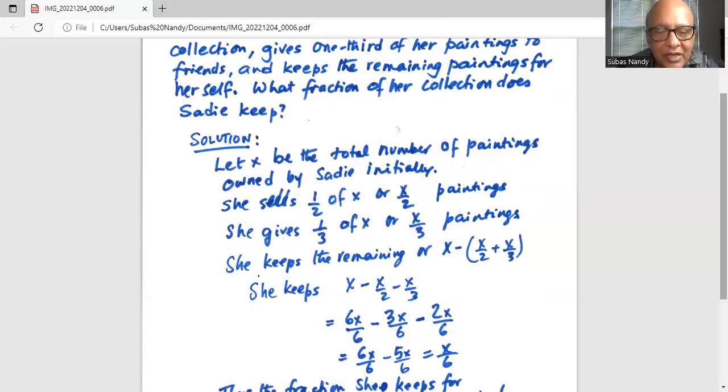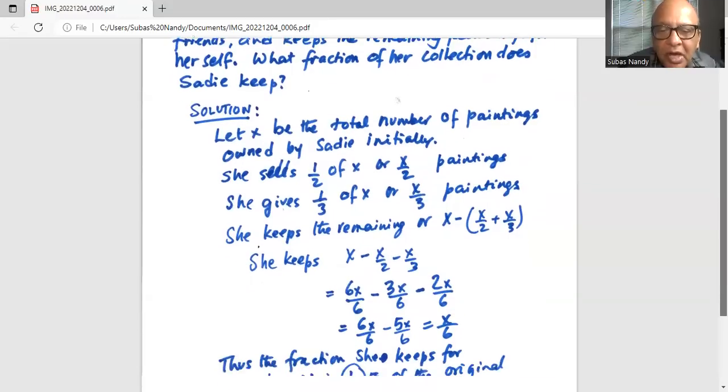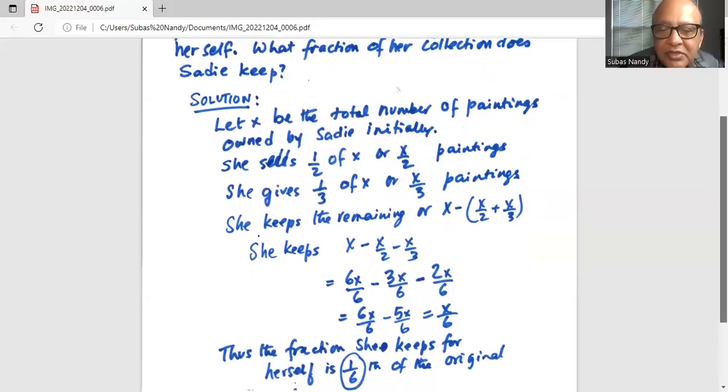Hence we have 6X minus 2X minus 3X. Both are minus, we add them. So we have 6X divided by 6, minus 3X minus 2X divided by 6 is minus 5X over 6.